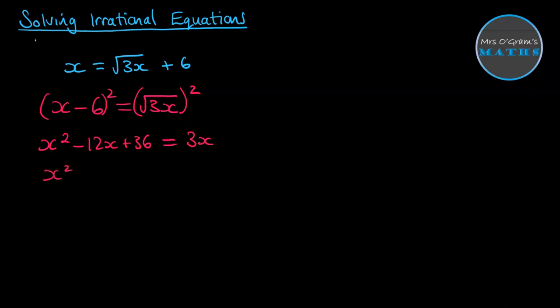Now we can rearrange that. So we get x squared minus 15x plus 36 is equal to 0. This one we can factorize. So we get x minus 12, x minus 3. So x is equal to 12 and 3.